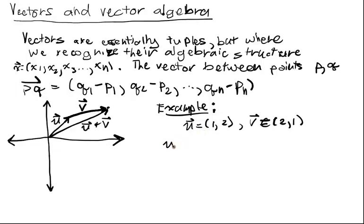Then U plus V, well, I'm just going to add entry-wise. And this actually corresponds with this picture. And if I add entry-wise, I'll just get 3, 3. So I add 1 to 2, and then 2 to 1, that'll give me 3, 3.